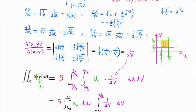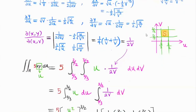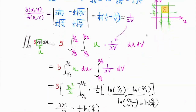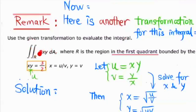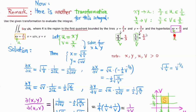At that point we compute the Jacobian, and then transfer everything to U and V. We find that U goes from this number to this number, V goes from this number to this number, and the integral is much easier to compute. Also, if you look at the function being integrated, it's 5 times X times Y, so letting U equal to X times Y is actually a good choice here — it makes the integral simpler.